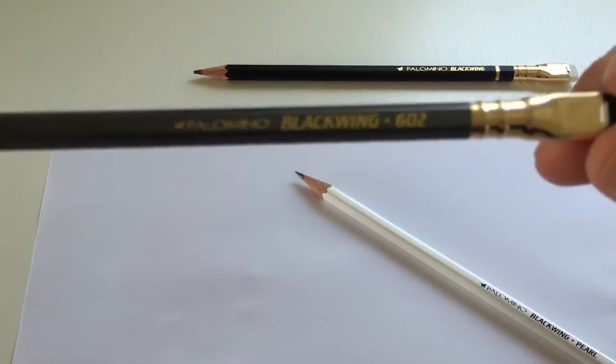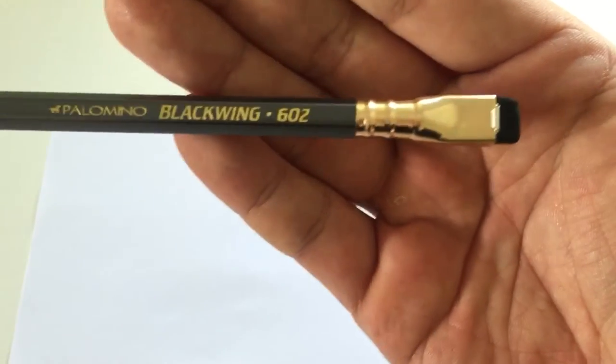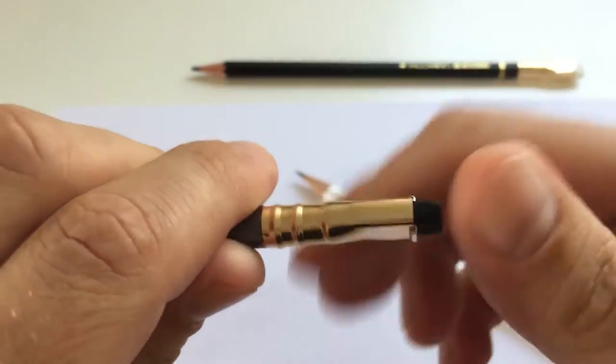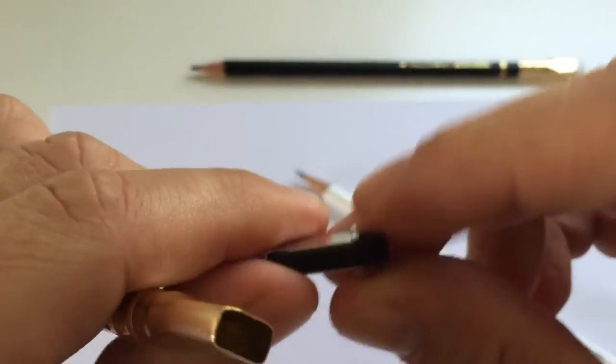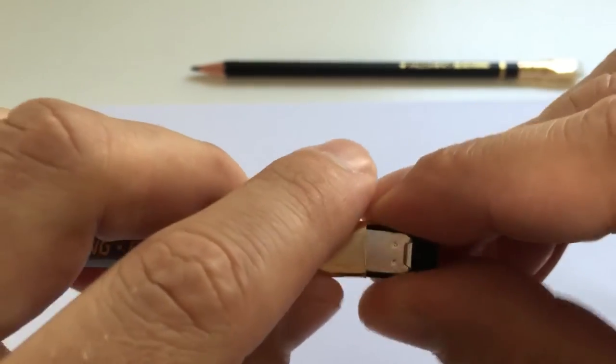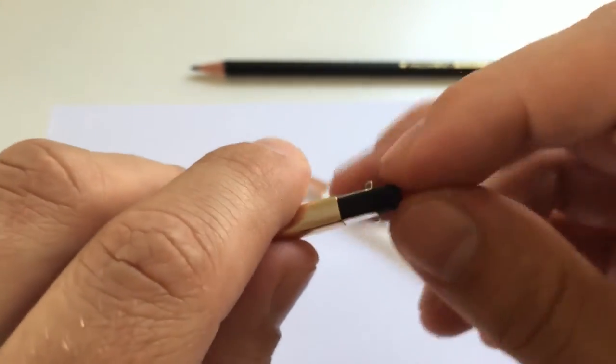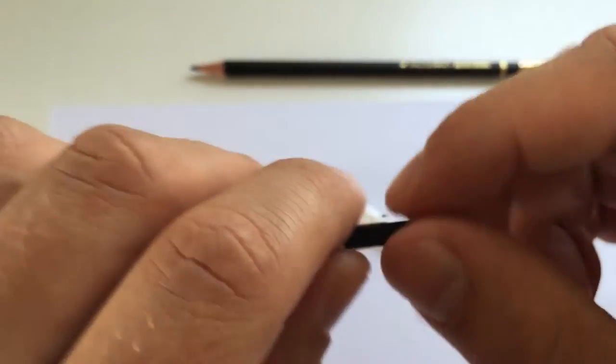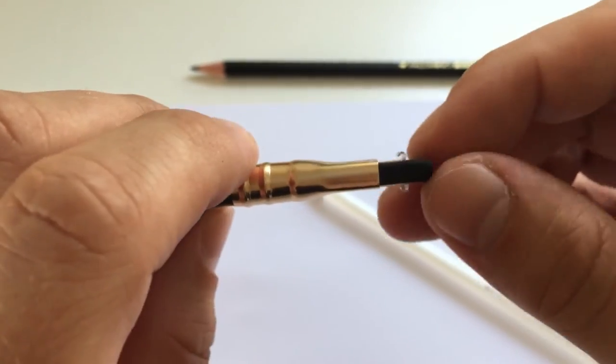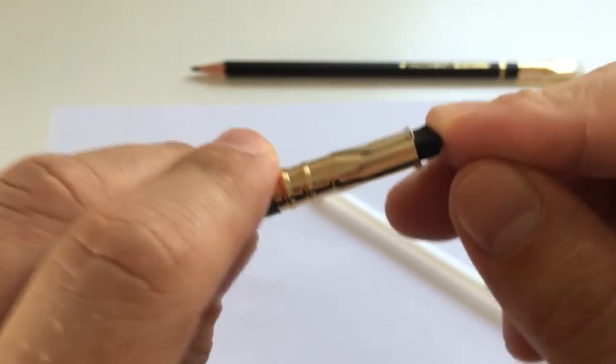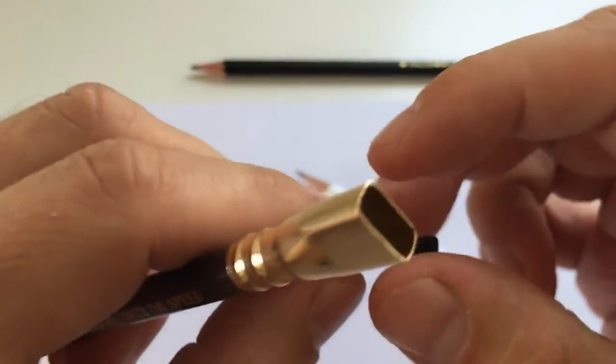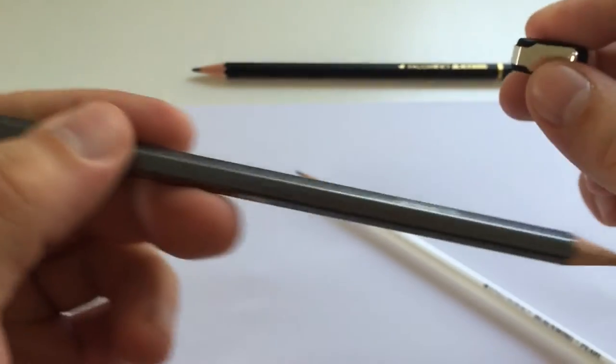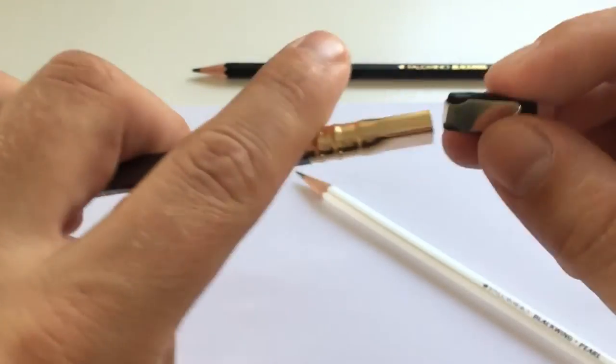Then there's the 602 here, which of course also has the same ferrule, aluminum, a black eraser that you can take out. You can swap that for different colors. I don't know why you would want to exchange that, because I can't imagine that I'll use up that whole thing within one pencil. But anyway, it's a neat feature.